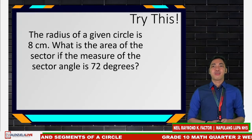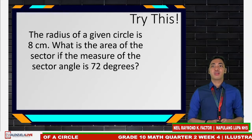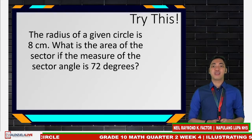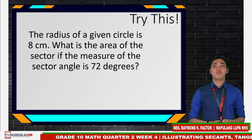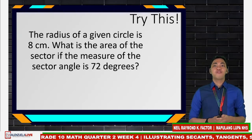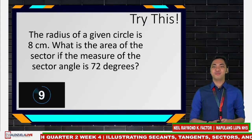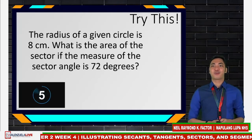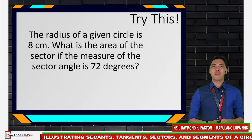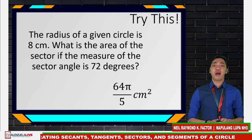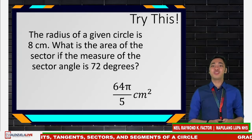Try this: the radius of a given circle is 8 centimeters. What is the area of the sector if the measure of the sector angle is 72 degrees? You may comment your answers. If you have answered 64 pi over 5 square centimeters, you are correct — you have understood the concept very well.